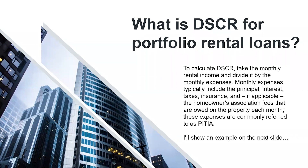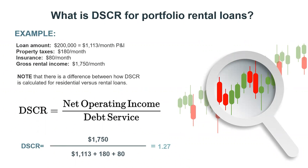Here is an example. Loan amount: $200,000, giving you a principal and interest payment of $1,113 — calculated at a rate of about 4.75%. Property taxes are $180 a month, insurance $80 a month, and gross rental income is $1,750 a month. If we take the $1,750 gross monthly rent and divide it by the debt service of $1,113 plus $180 for property taxes plus $80 for insurance, that number gives you $1.27. So that would be a good thing because we're over that $1.20. You can simply calculate this yourself to know your max proceeds on a cash-out refinance.